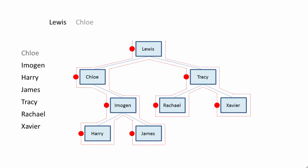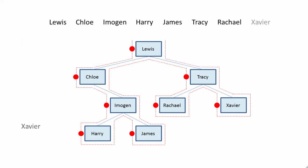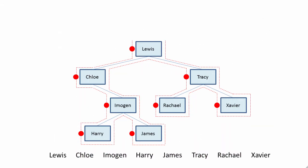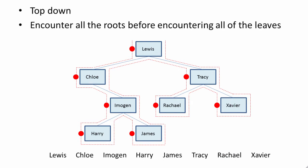So this is the order of the data produced when we perform a pre-order traversal. To summarise, pre-order traversal is known as a top-down traversal — we encounter all of the roots before we encounter all of the leaves.